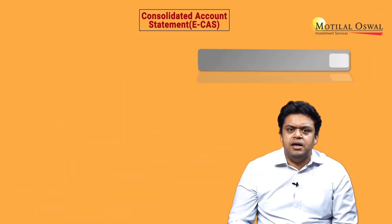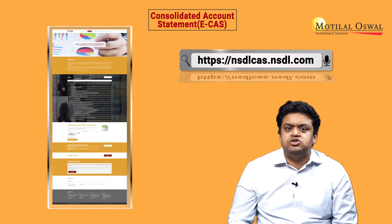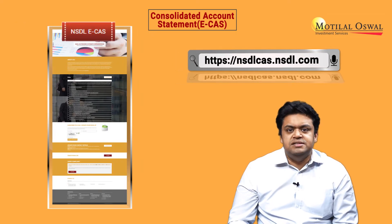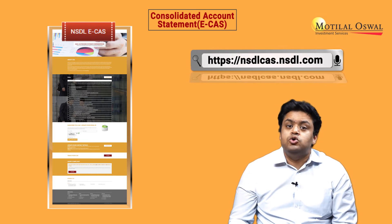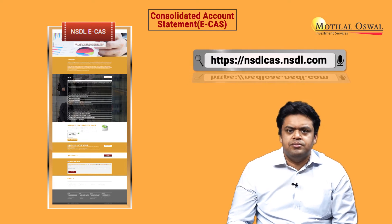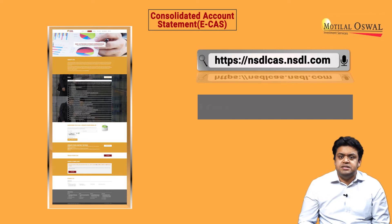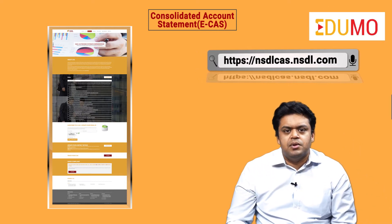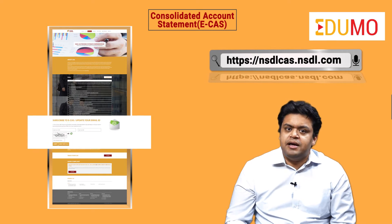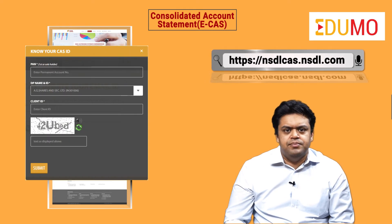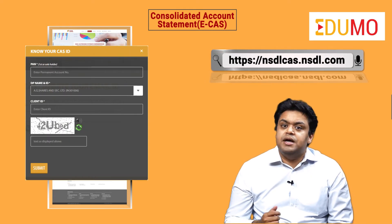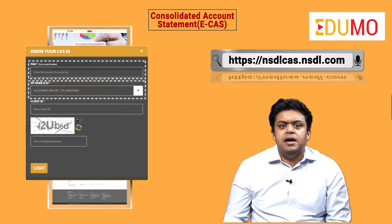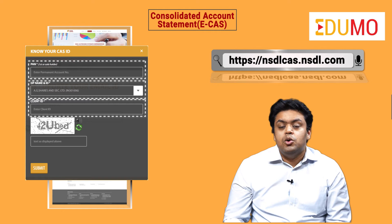Investors can click on the link nsdlcas.nsdl.com and click on NSDL ECAS to sign up for this feature. For subscription to ECAS, one needs to know the CAS ID. It can be found by clicking on the 'Know Your CAS ID' tag. The investor has to provide their PAN, DP name, DP ID, and client ID.